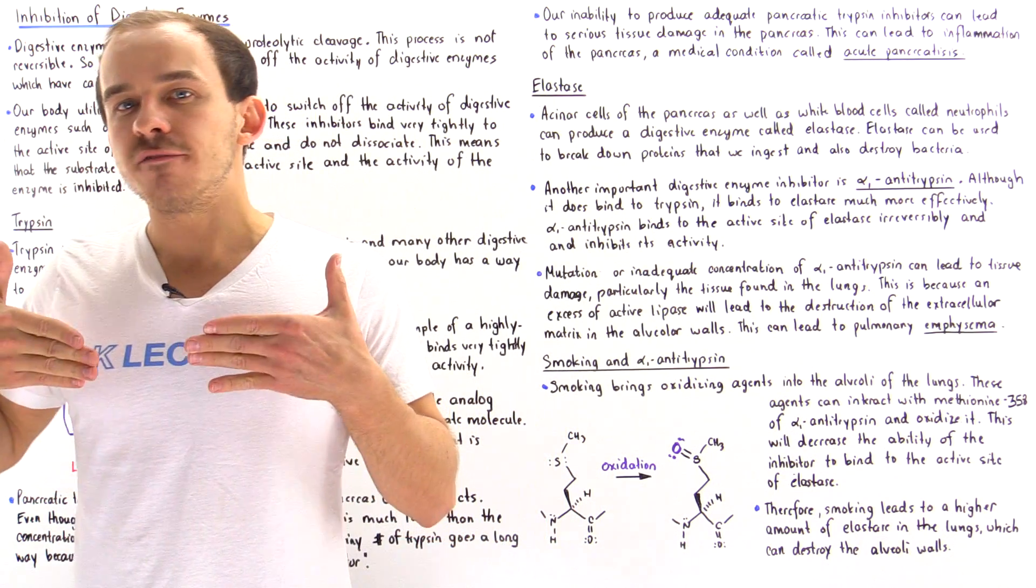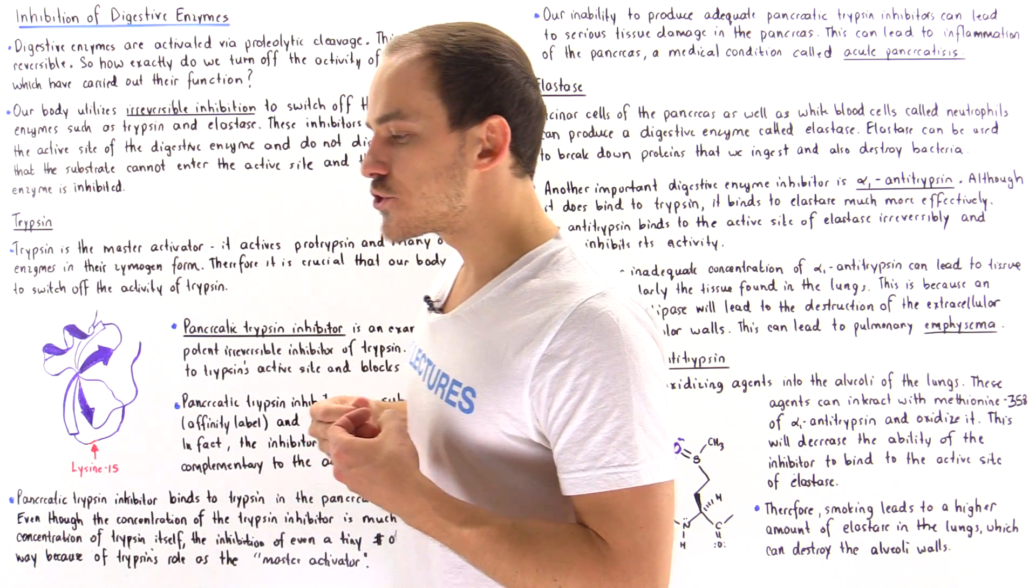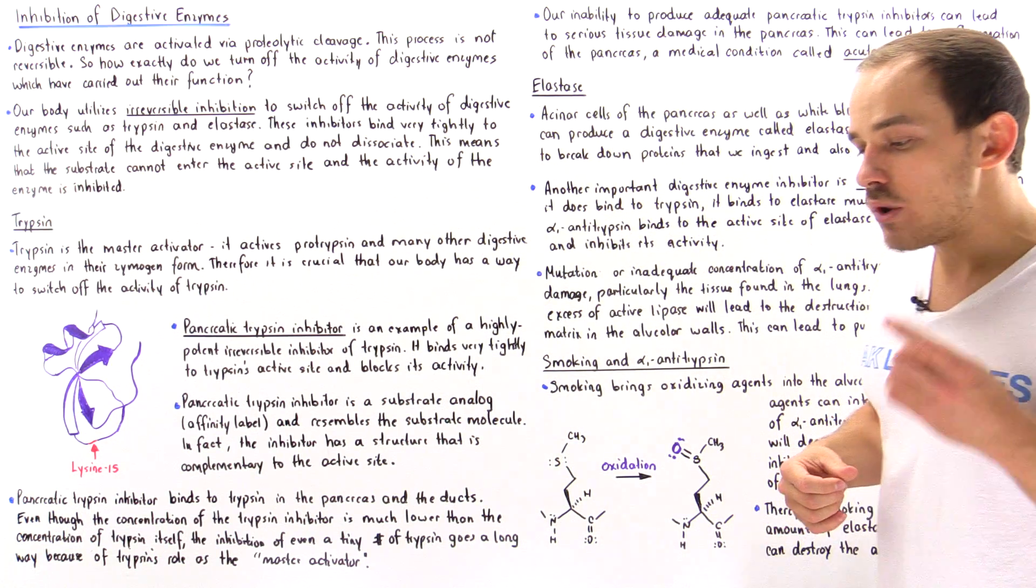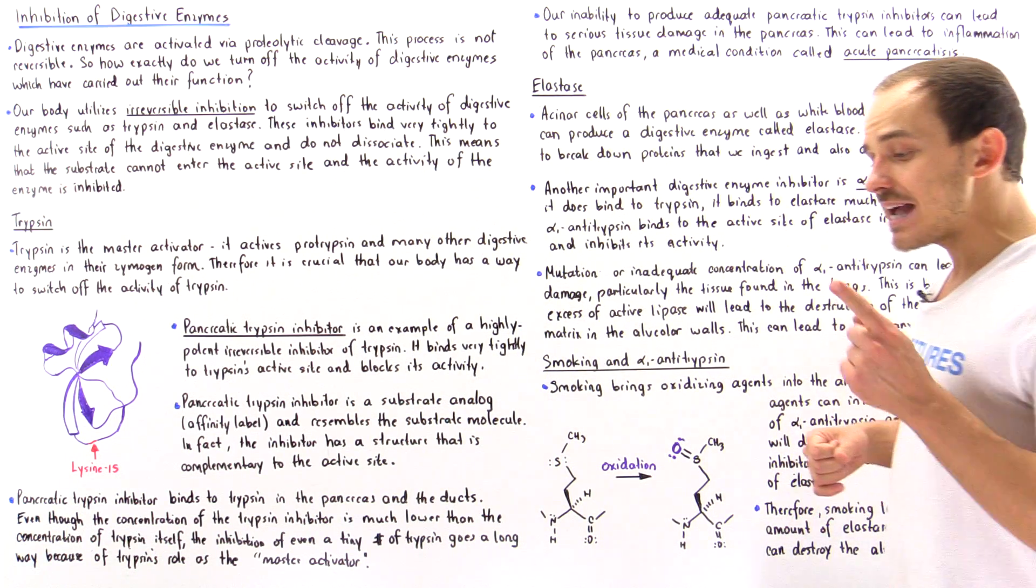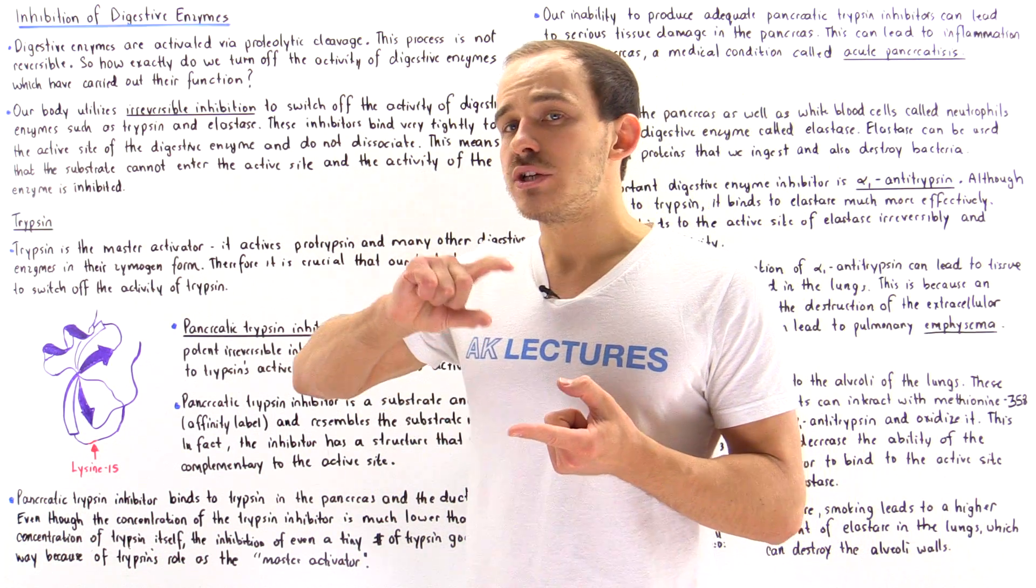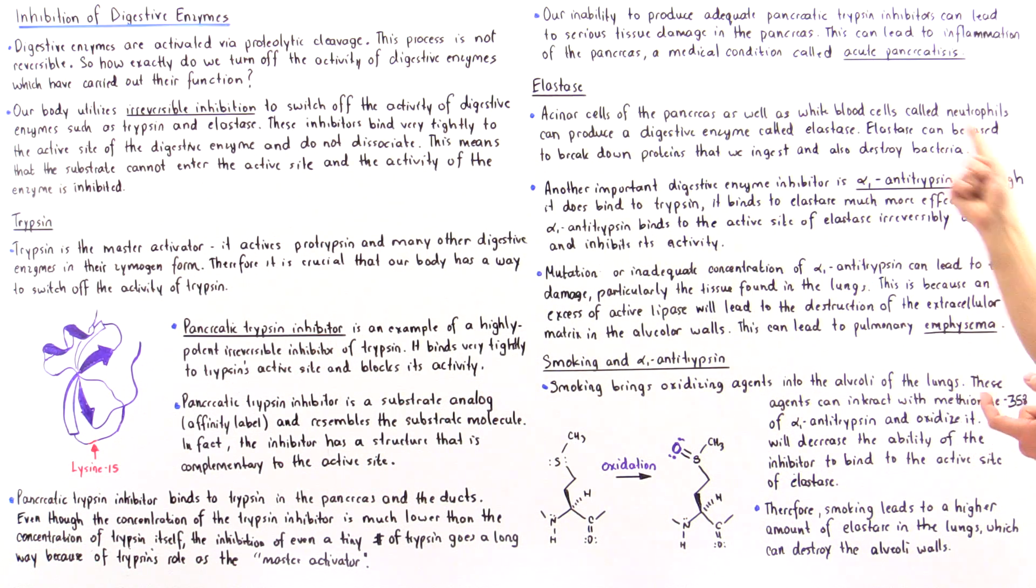Agents basically reach the alveoli of our lungs. And what these oxidizing agents can actually do is they can actually change or mutate the structure of alpha-1 antitrypsin.